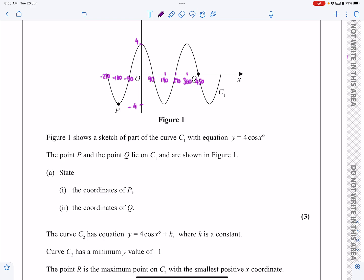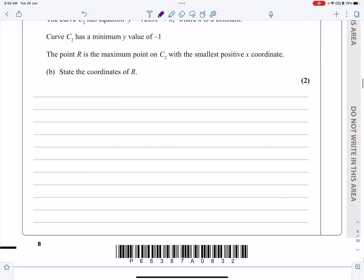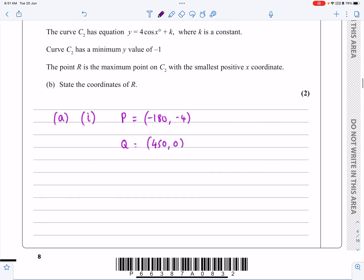State the coordinates of P and of Q. So P is minus 180, minus 4, and Q is 450, 0. So let's actually just go and write that down. I'm not going to be able to show much working out in terms of written evidence. So P was minus 180, minus 4, and Q is going to be 450, 0.